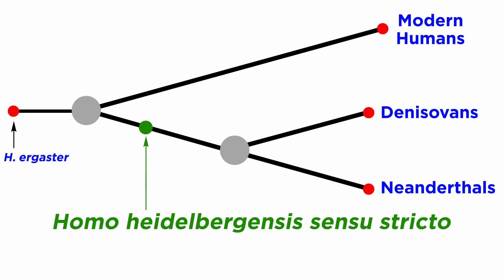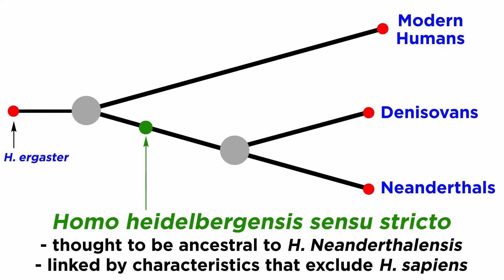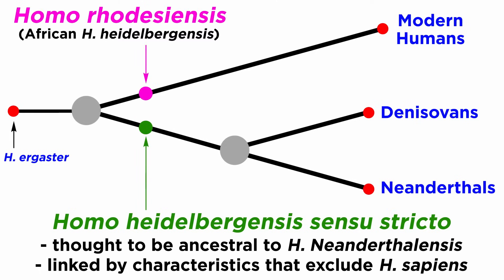For this reason, Homo heidelbergensis is generally appreciated to be ancestral to Homo neanderthalensis, the Neanderthals, who evolved entirely in Europe. This is due to some characteristics that link the two species, effectively to the exclusion of Homo sapiens.